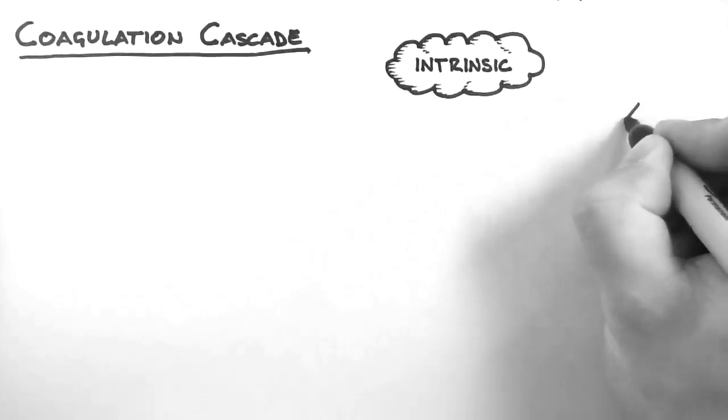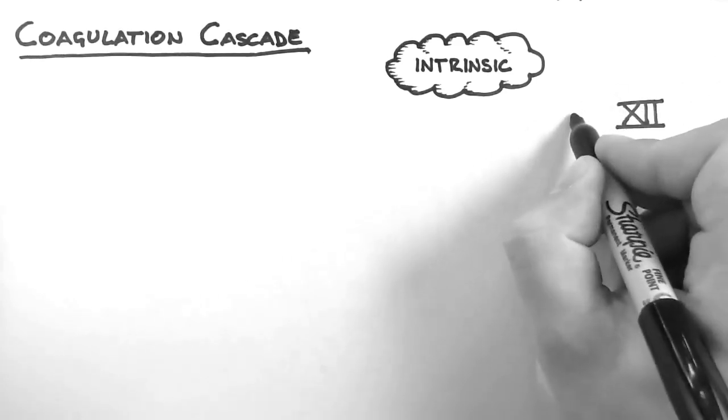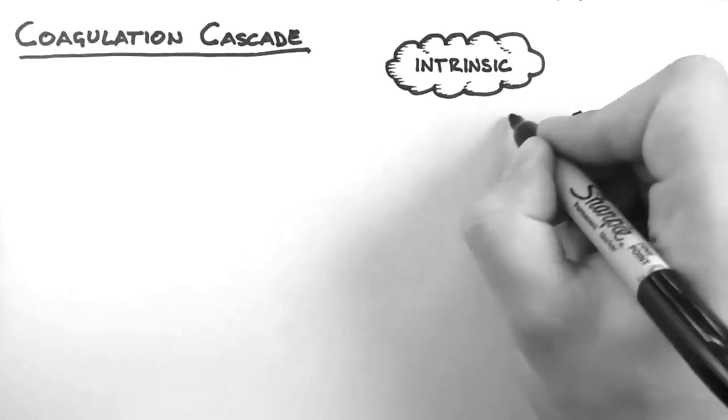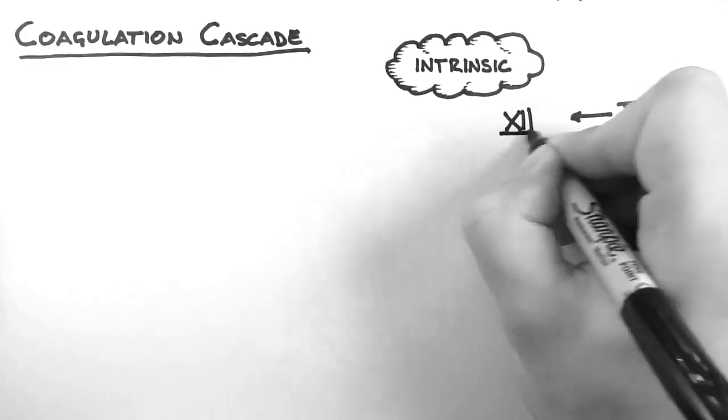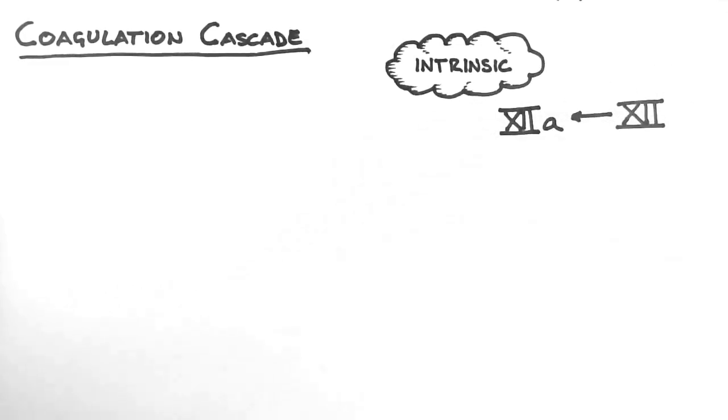So let's look at what's involved. These pathways consist of a number of proteins called factors, activating one another. These are usually denoted by Roman numerals, and the first factor of the intrinsic pathway is factor 12.